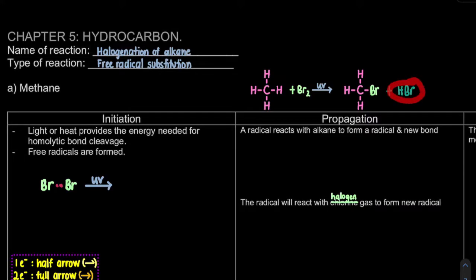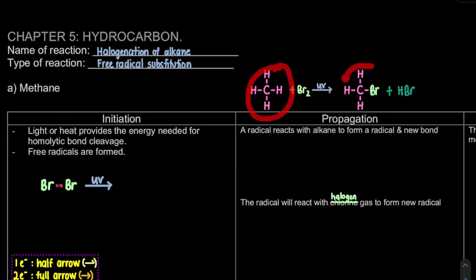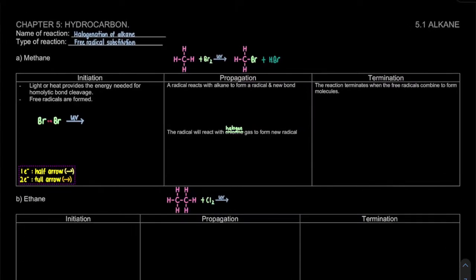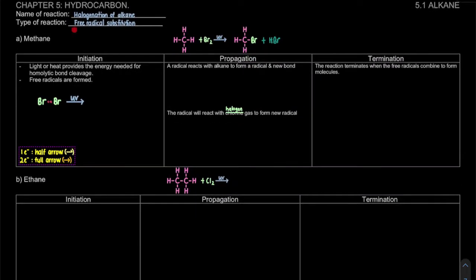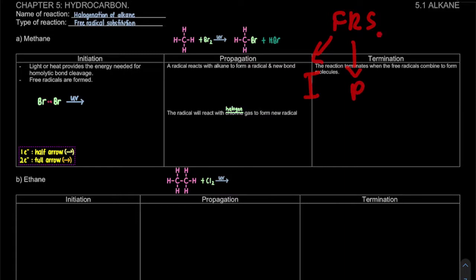The byproduct is not compulsory - the compulsory is the main product itself. For the case of CH4, there is only one possibility. So next, what we're going to look at is the mechanism of the free radical substitution. For the free radical substitution, there are three steps: initiation, propagation, termination.